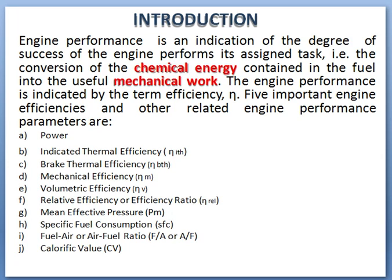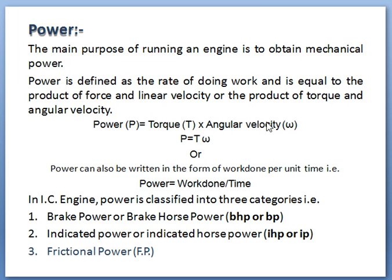Let's discuss one by one. Power — the main purpose of running an engine is to obtain mechanical power. Power is defined as the rate of doing work and is equal to the product of force and linear velocity, or the product of torque and angular velocity. Power is equal to torque into angular velocity, that is T into omega, or power can also be written as work done per unit time. In internal combustion engines, power is classified into three categories: brake power or brake horsepower, indicated power or indicated horsepower, and friction power.